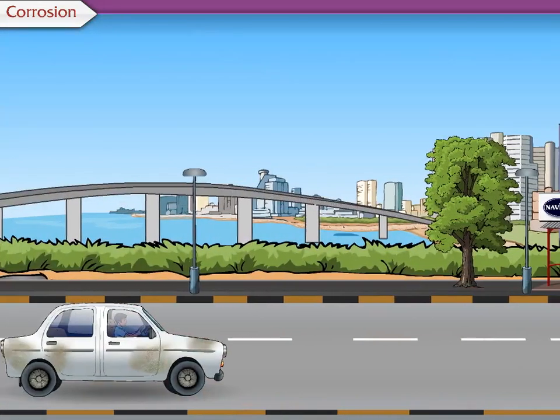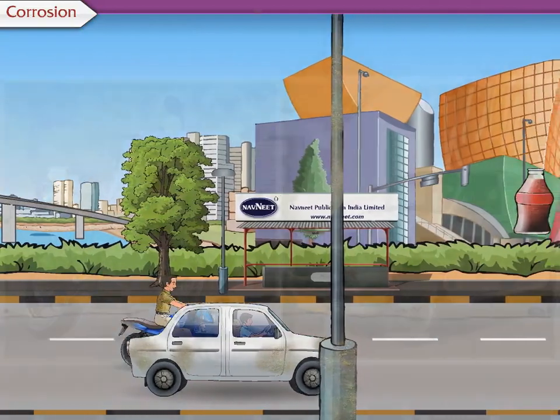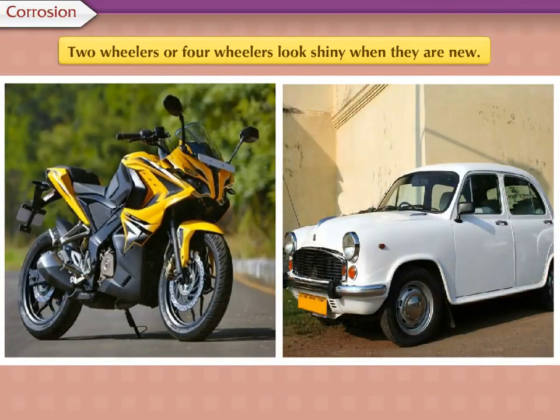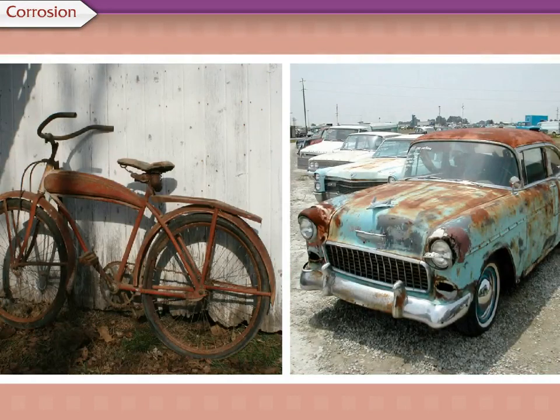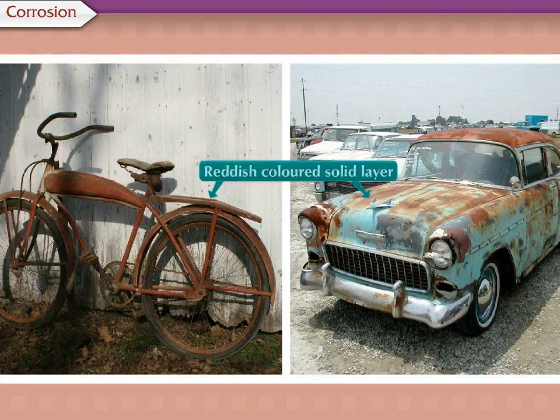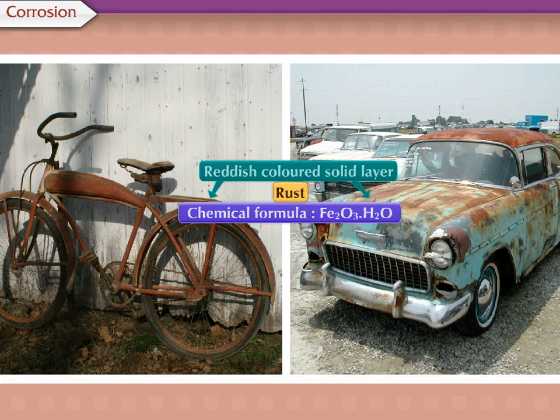In our everyday life also, we come across effects of redox reactions. Two-wheelers or four-wheelers look shiny when they are new. But when these vehicles become old, a certain type of reddish-colored solid layer collects on their metallic surface. This layer is called rust. Its chemical formula is Fe2O3·H2O.